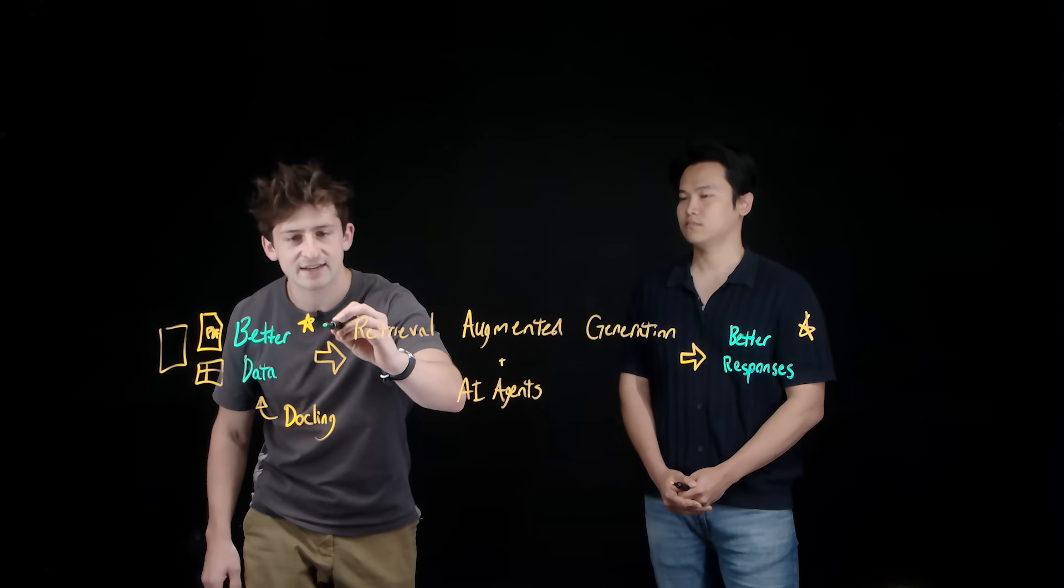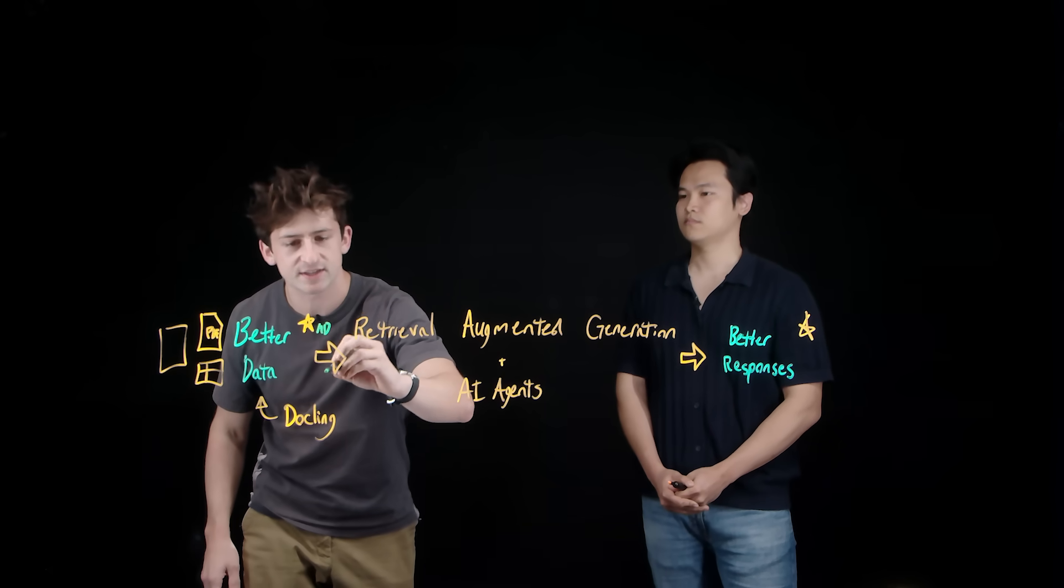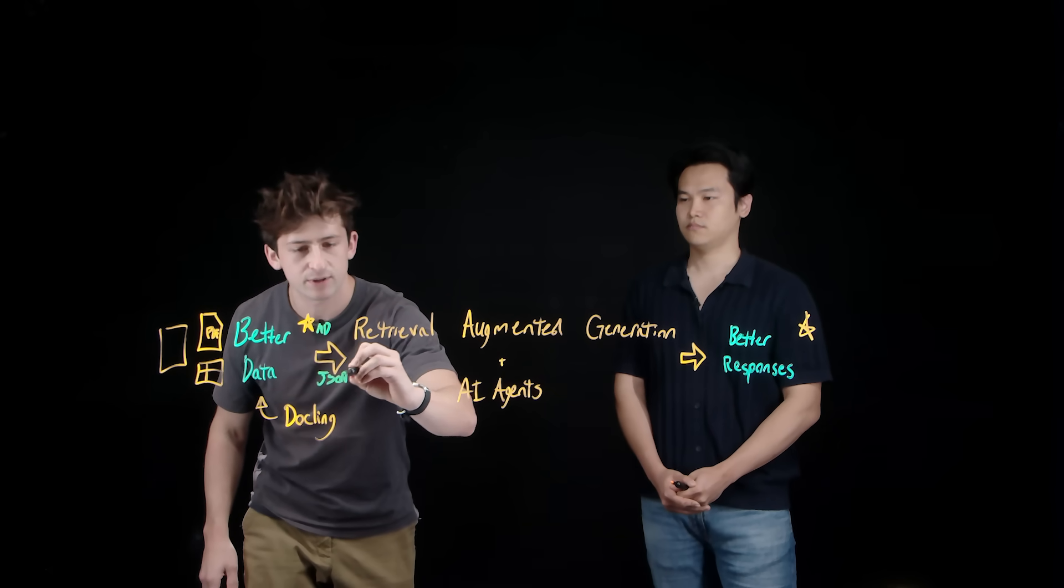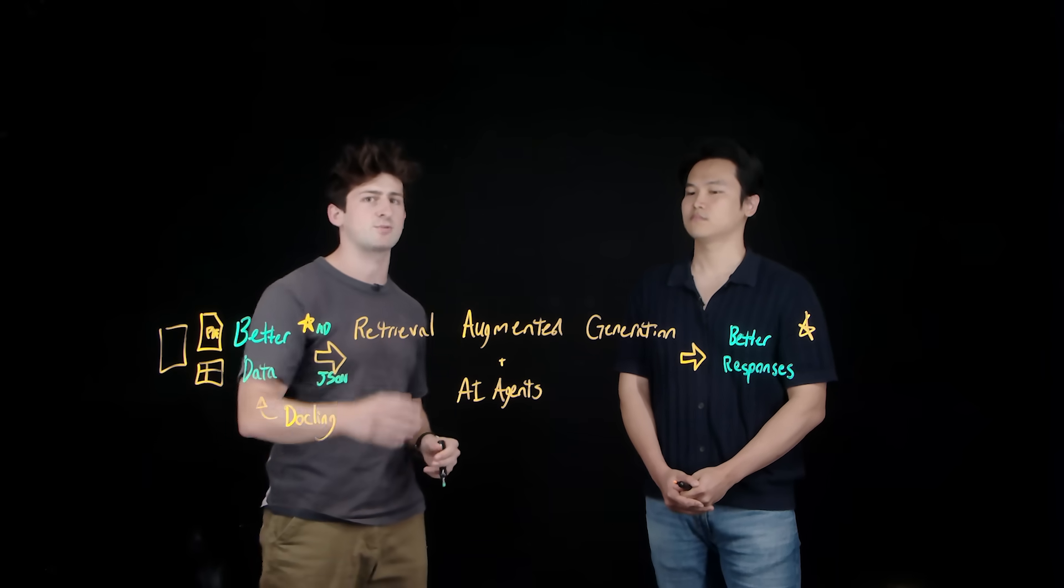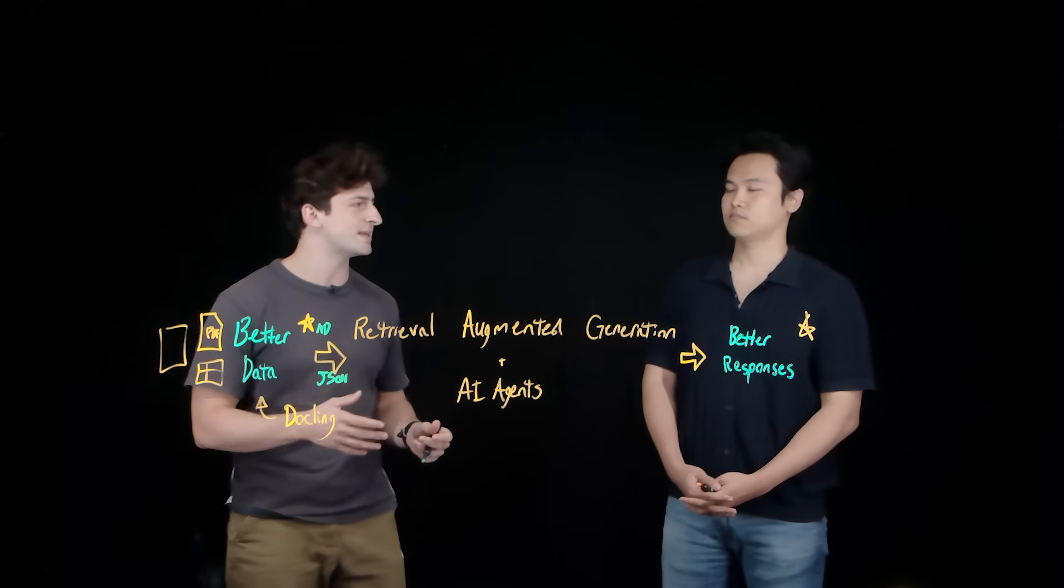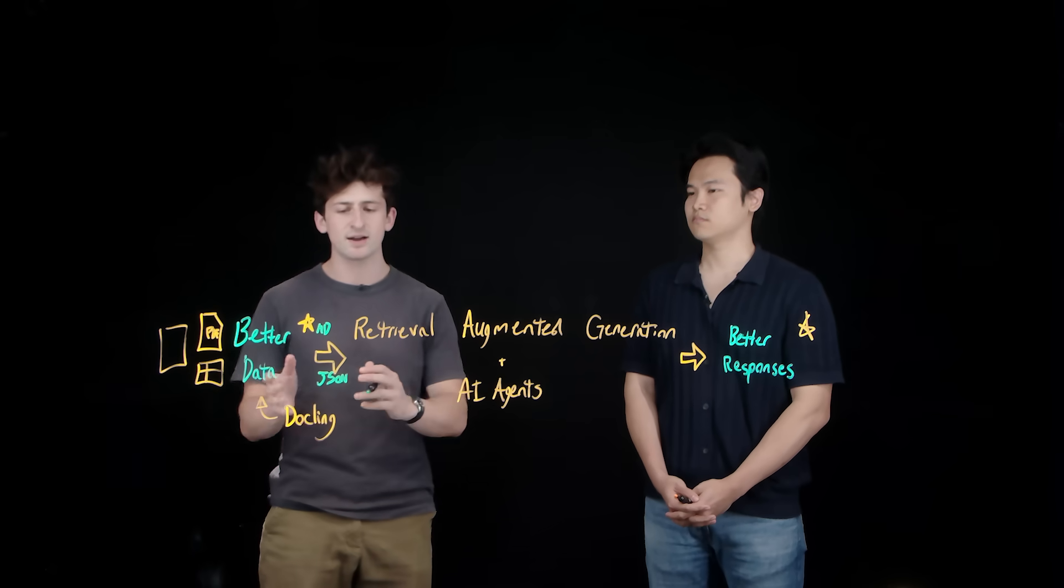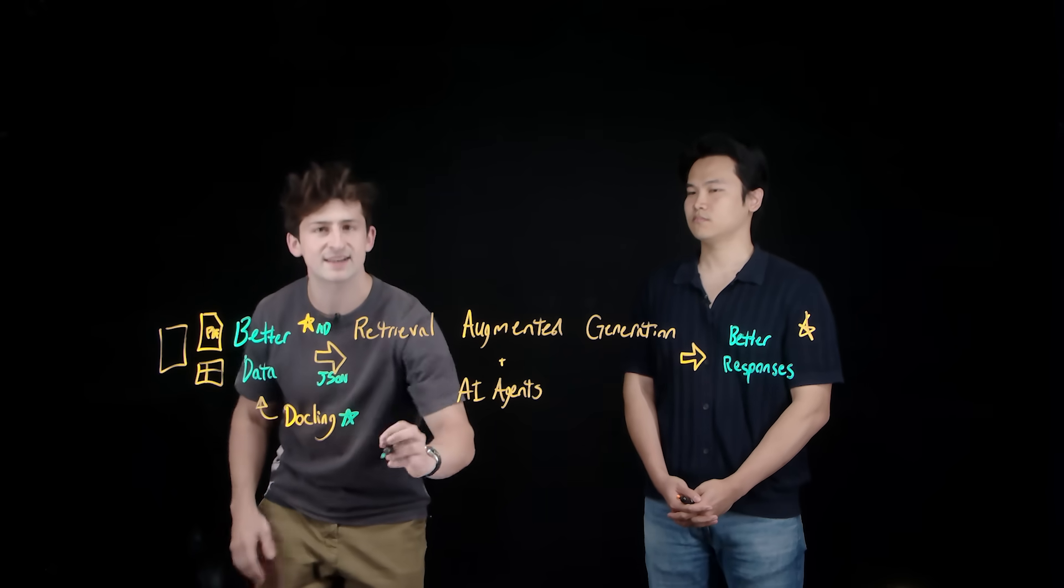But these are all types of unstructured data that need to be converted into a format such as Markdown or Plain Text or JSON in order to be used in RAG or agentic workflows. And typical scripting and OCR can be quite tedious, but Dockling is purpose-built for this exact situation.